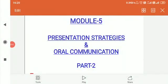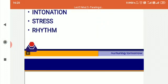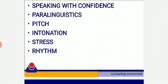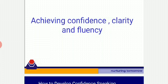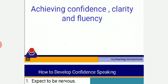Hello students, today we are going to discuss module 5 of the subject professional English. The title is presentation strategies and oral communication. We are discussing part 2 of the lecture, which will cover the following topics: speaking with confidence, paralinguistics, pitch, intonation, stress and rhythm. As we have already discussed what is a presentation, its purpose, and the kinesics part involved, now we will talk about how to achieve confidence, clarity and fluency in the presentation.